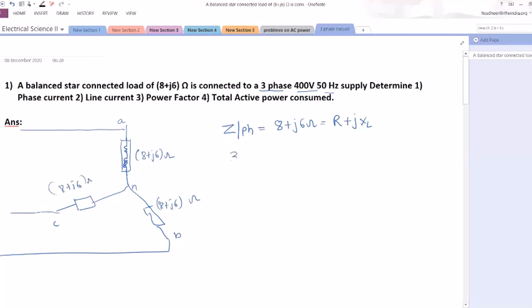Remember whenever the voltage given in a problem until unless specified it is a line voltage. So the three phase line voltage between A to B, B to C, C to A is 400 volts and frequency is 50 hertz. So the line voltage VL is 400 volts. Whenever you are doing the three phase problems, better you write down these formulae on one side so that you will not get confused.